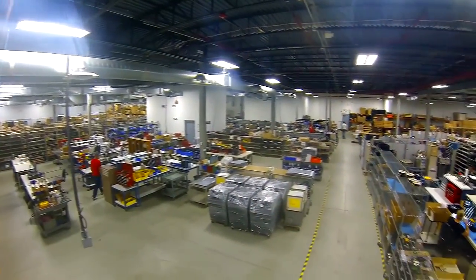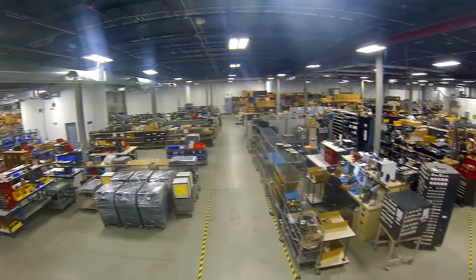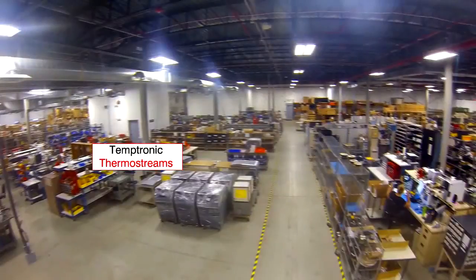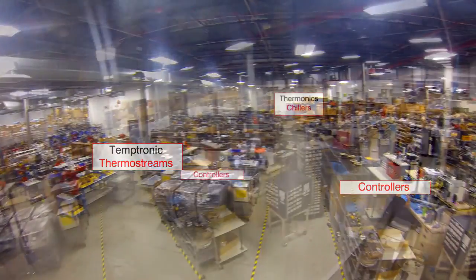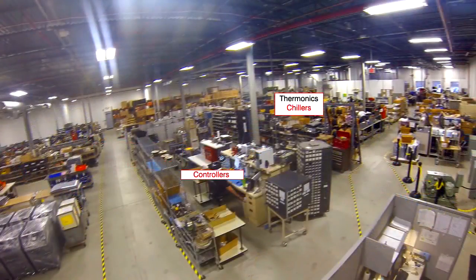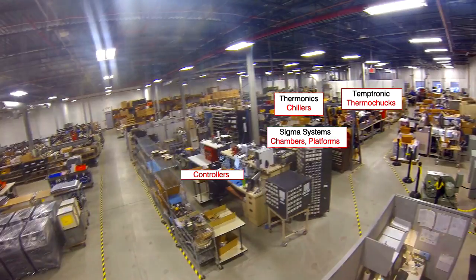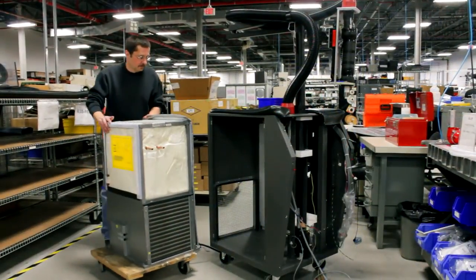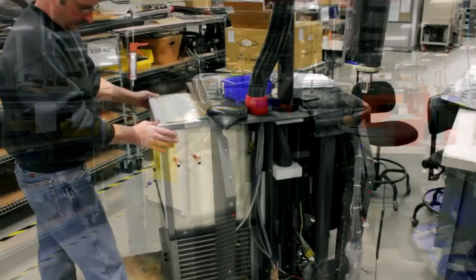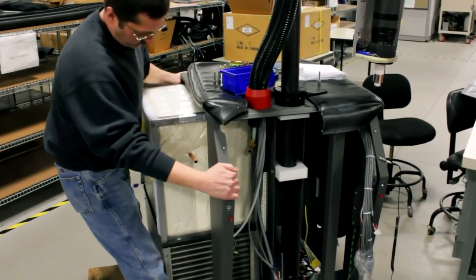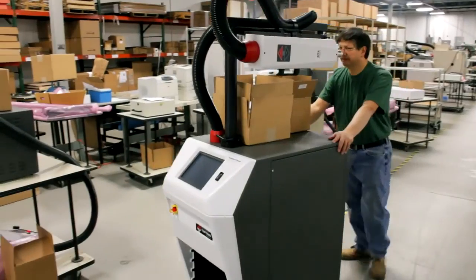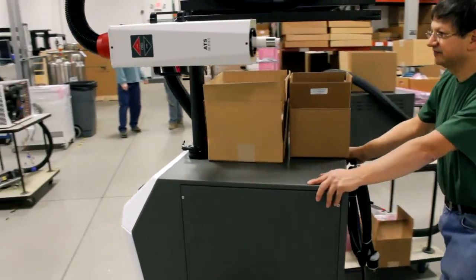There are five electromechanical assembly stations, one each for thermal streams, controllers, chillers, chambers and platforms, and thermal trucks. These stations are where chassis and refrigeration units are integrated with controllers and electronics. Once built, these assemblies are delivered to our final test area and eventually our final inspection area.